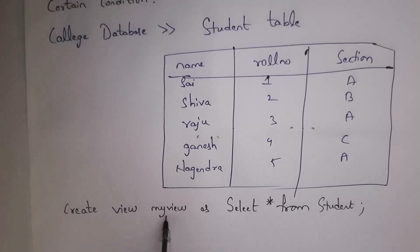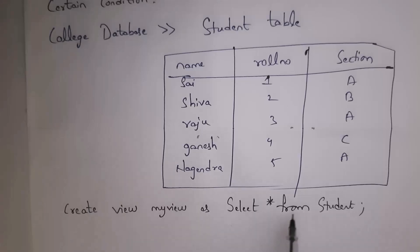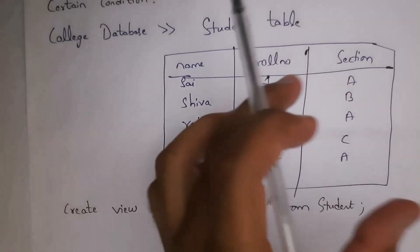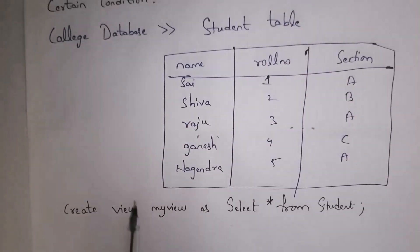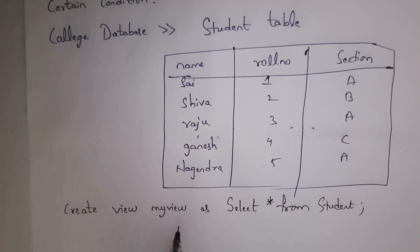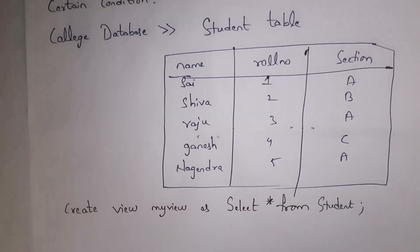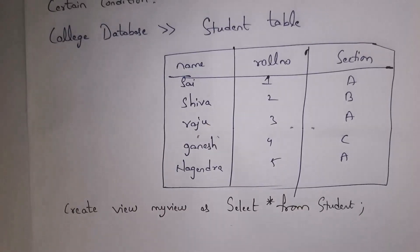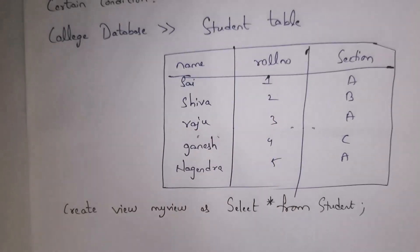In 'my_view' I selected the complete data present in the student table. So 'my_view' contains all the data from the student table. This 'my_view' is also a table. Previously there was only one table — the student table — but now there are two tables: the student table and the 'my_view' table.